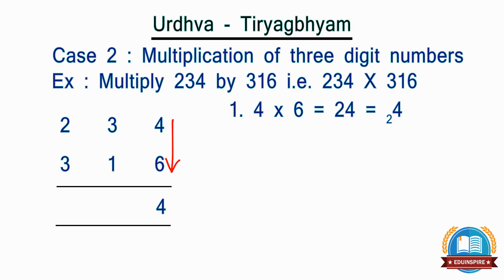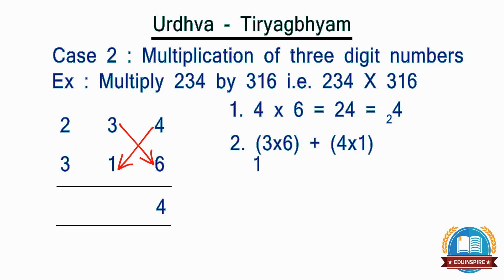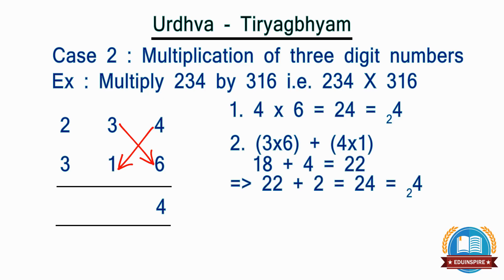Step 2: take the last 2 digits of the numbers and multiply diagonally, i.e. 3 into 6 and 4 into 1, the sum of which becomes 22, and add the carried over number, i.e. 2, to it. So the total becomes 24. We will retain 4 as the second digit of the answer and carry 2 to the left.